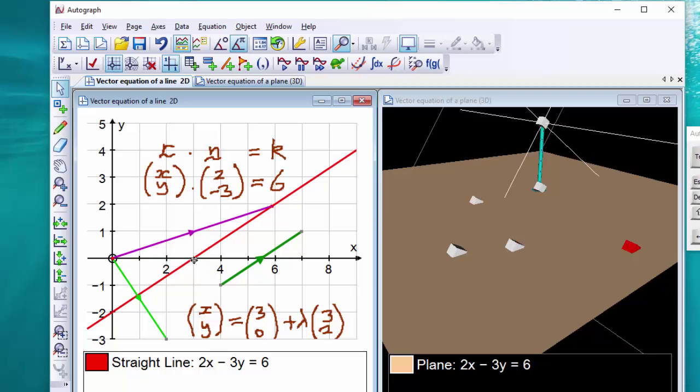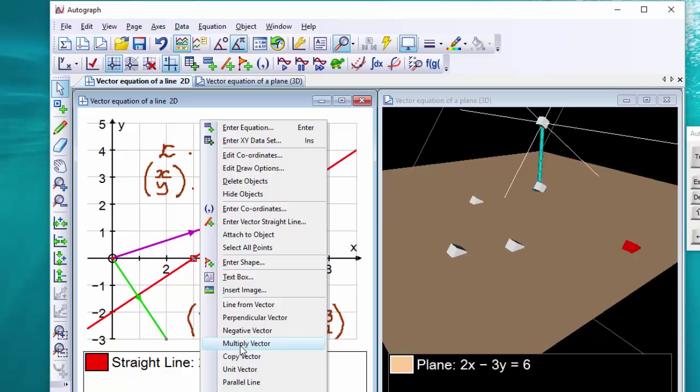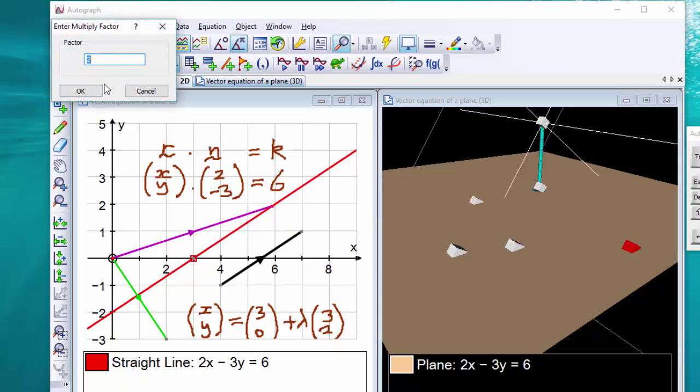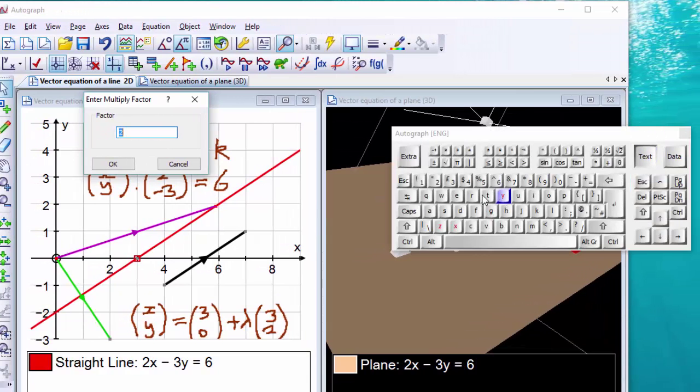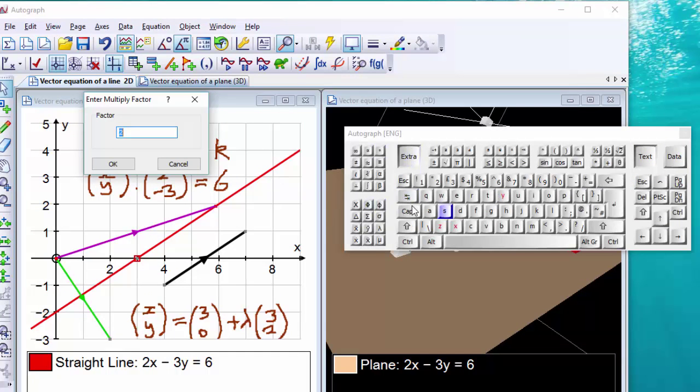So if I select this point and this vector, I can do a multiply vector using a constant lambda. Now, Alt-L puts lambda in, or you can use the keyboard. Well, let's use the keyboard because we haven't used it in this one yet. I'm going to put in lambda. There it goes.